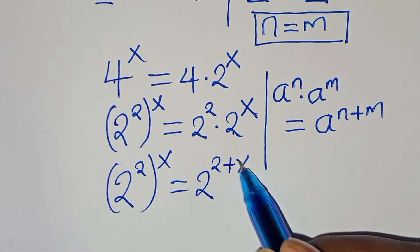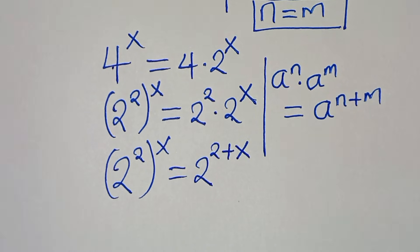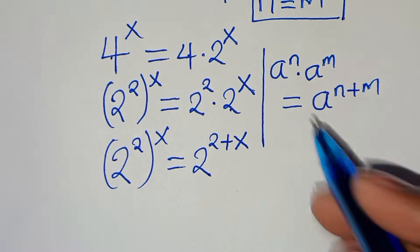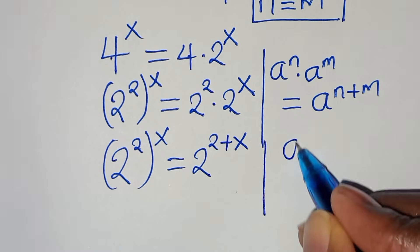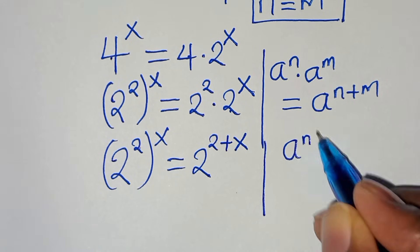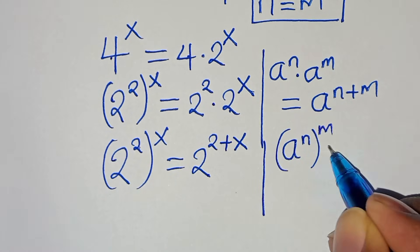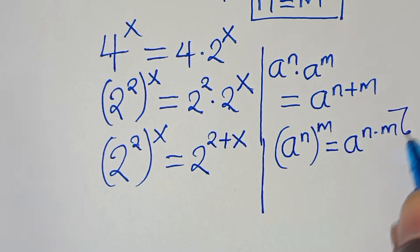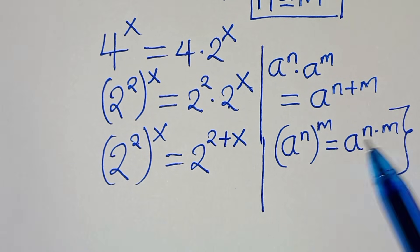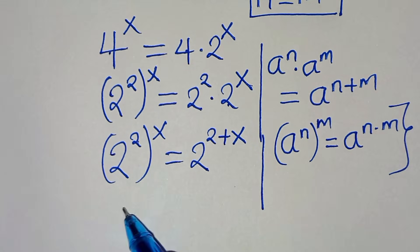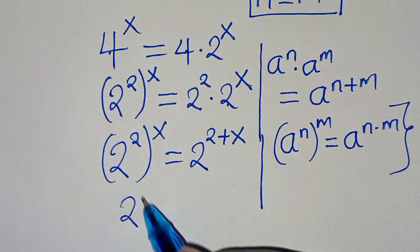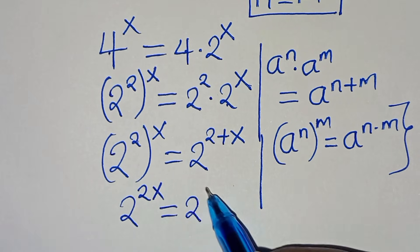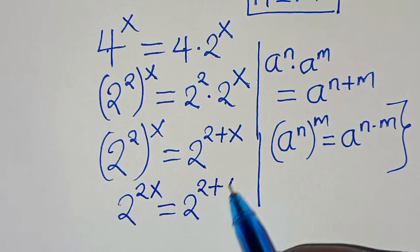Now 2 to the power of 2 raised to the power of x is again in the form of a to the power of n raised to the power of m, which we can express as a to the power of n times m. Applying this property, we have 2 to the power of 2x, and this is equal to 2 to the power of 2 plus x.